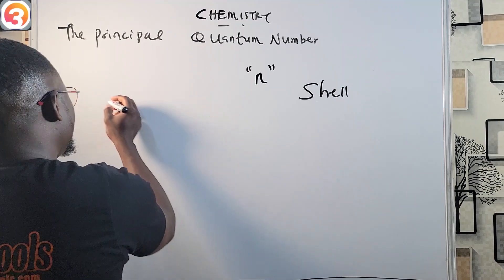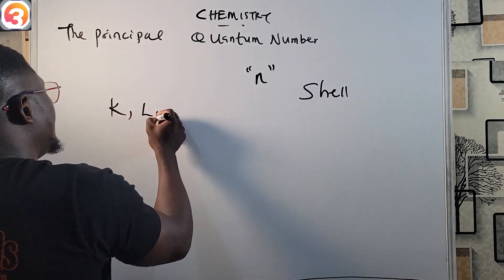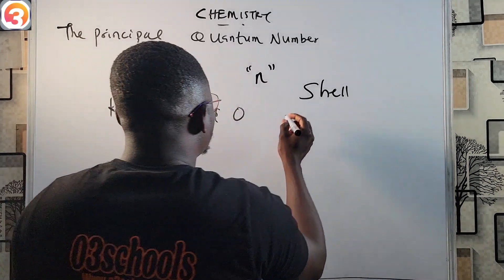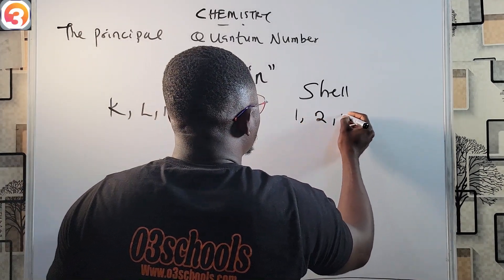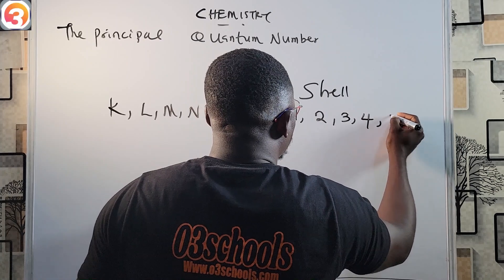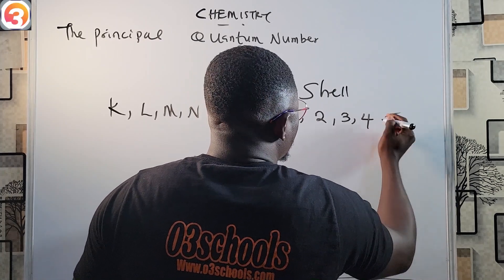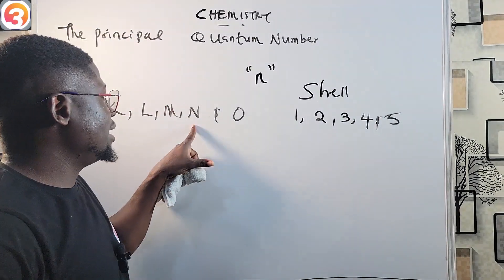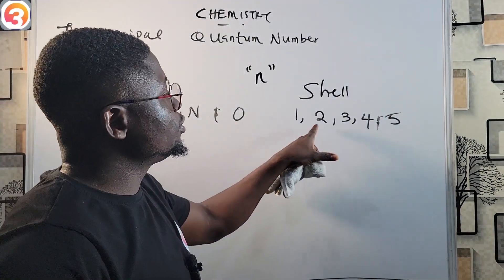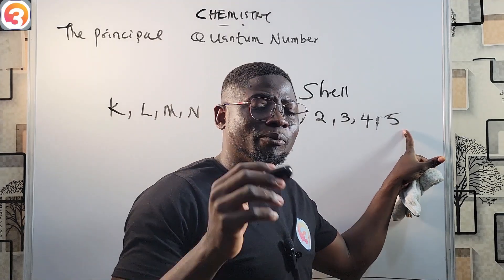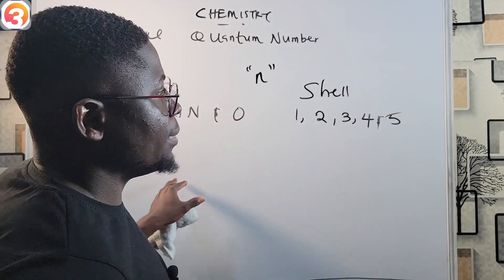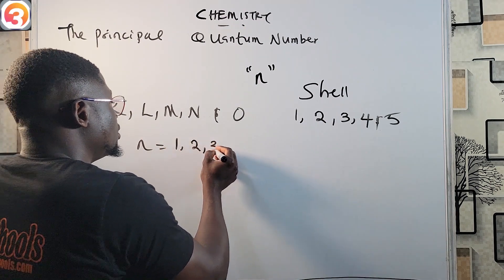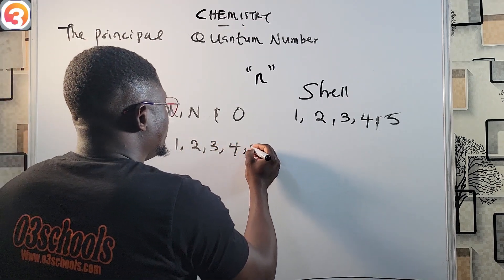Generally, the K, L, M, N, and O shells correspond to principal quantum numbers one, two, three, four, and five respectively. In other words, n = 1, 2, 3, 4, 5 and so on for K, L, M, N, O and so on.